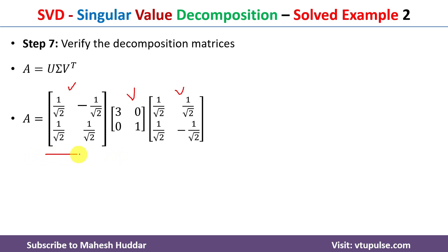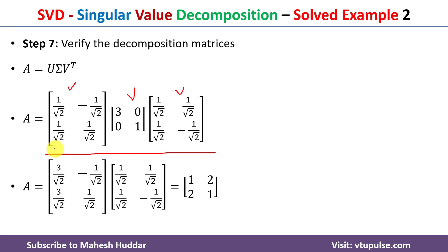To verify, we multiply U·Sigma·V-transpose. Multiplying the first two matrices and then by V-transpose gives back the original matrix [1 2; 2 1], confirming that the SVD was computed correctly. In this video I discussed what SVD is and how to find the factors U, Sigma, and V-transpose of a given matrix. If you liked the video, please like, share, subscribe, and press the bell icon for updates.